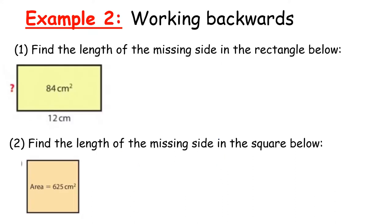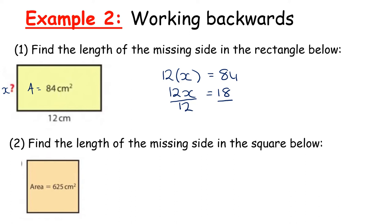Now let's work backwards. In example 2 we have a rectangle with one side of 12 centimetres and an unknown side, and we know the area is 84 centimetres squared. Calling the missing side x, we write 12x = 84. Dividing both sides by 12 gives x = 7 centimetres.